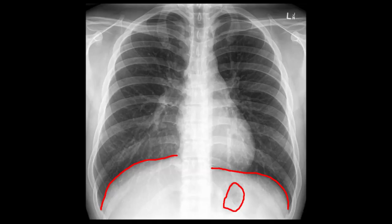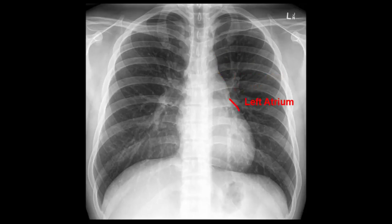Next we will look at the borders of the heart and major blood vessels. Let's do this clockwise from top to bottom: first the subclavian artery, then the aortic arch, the pulmonary artery, a small bit of the left atrium, the left ventricle, the right atrium, the superior vena cava, and the ascending aorta.